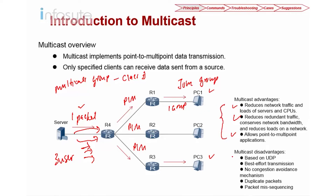Multicast also has its own fair share of disadvantages. Multicast is based on UDP, which means it's best effort. There is no way to check for sequencing, because UDP doesn't have any sequence number. There is no congestion avoidance, and you might have duplicate packets. All of this can be mitigated by the multicast application.